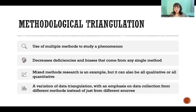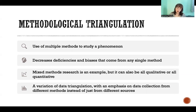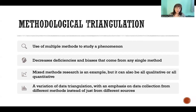Methodological triangulation is really a variation of data triangulation, but it specifically involves using multiple different methods to collect your multiple different sources of data. In regular data triangulation, it could be that you're collecting the same data multiple times using the same method — here we're specifying multiple methods. It decreases deficiencies and biases that come from any one particular method, and it can be a blend of qualitative methodologies, quantitative methodologies, or both, in which case the research would be considered mixed methods research. So mixed methods is methodological triangulation, but methodological triangulation isn't always mixed methods if all methods are either qualitative or quantitative.